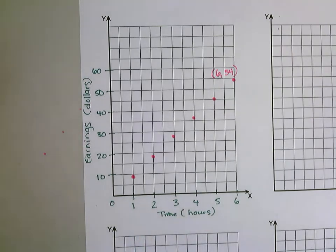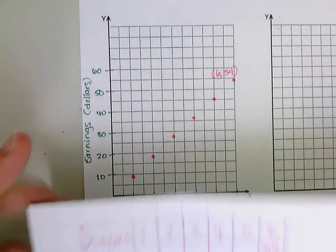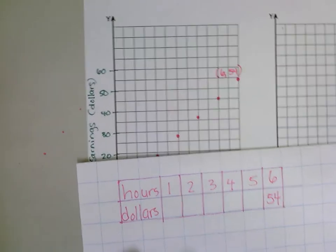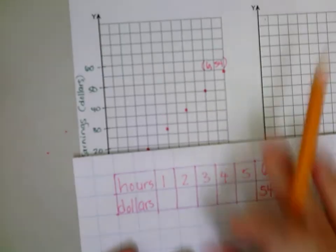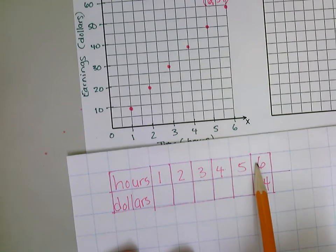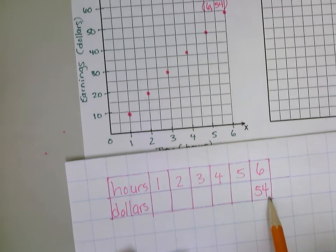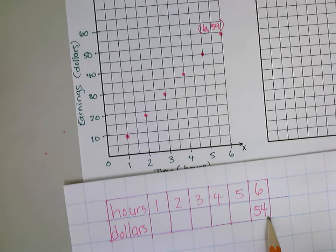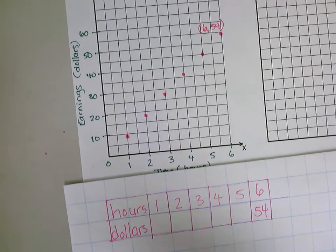I can kind of look back at my ratio table here that I've made. Hours I have one hour, two, three, four, five, and six. And then dollars, I know they made fifty-four dollars in six hours.